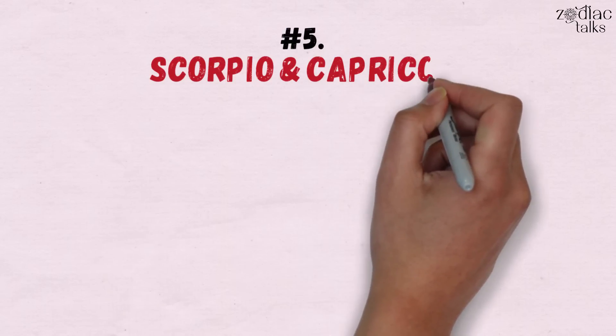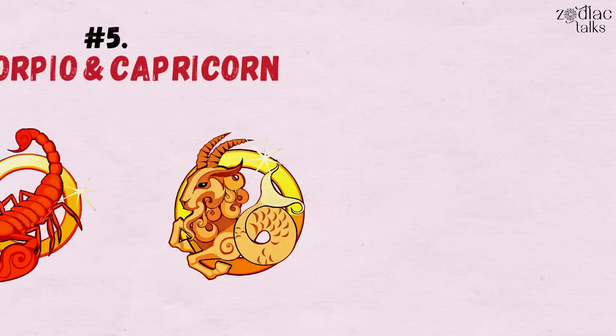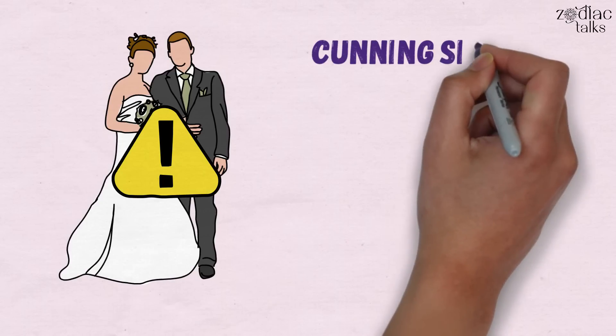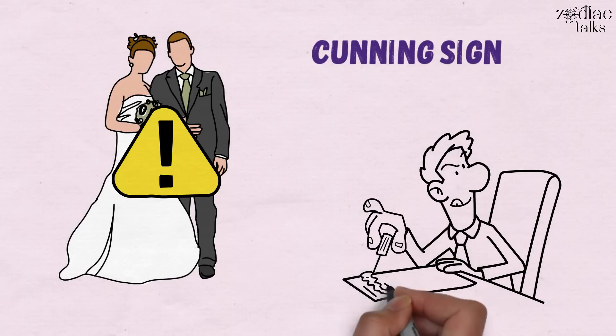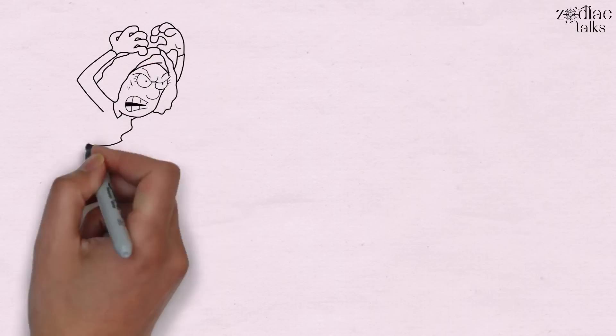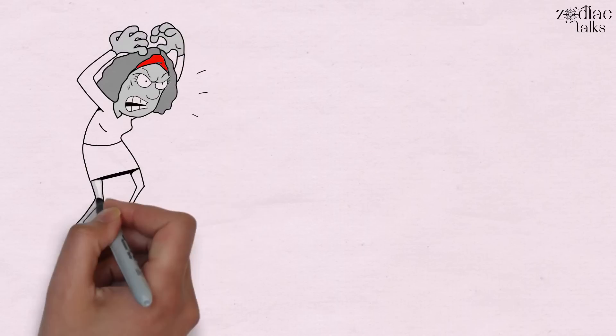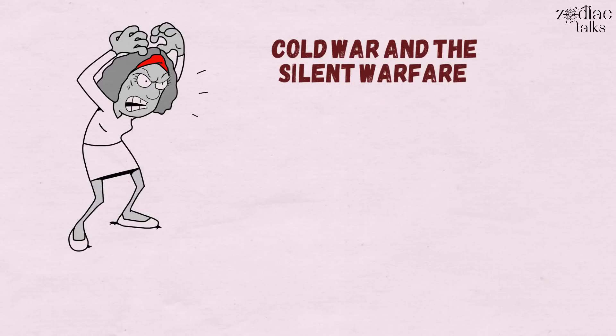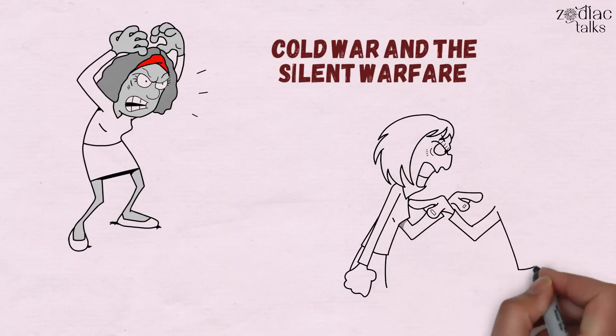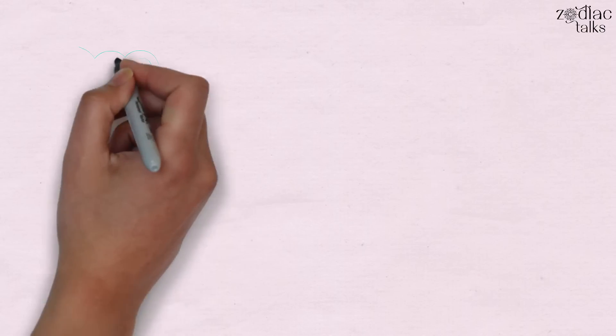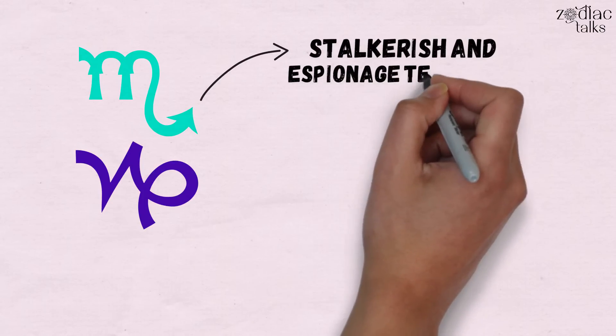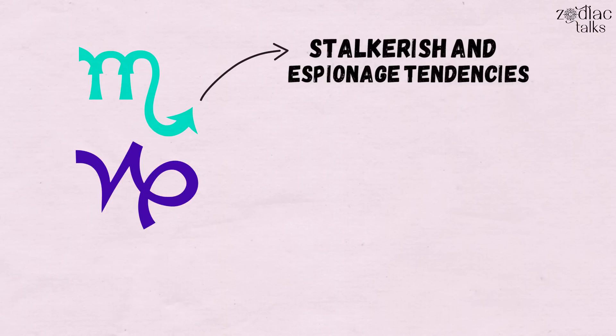Number five: Scorpio and Capricorn. This is perhaps the most dangerous and deranged pair of the Zodiac. Scorpio is a cunning sign that's capable of many misdeeds, but Capricorn is even worse. They just often don't get credit for it. These two are the epitome of the Cold War and silent warfare. They will keep each other very close because they think of each other as enemies. Both of these signs have strong stalkerish and espionage tendencies, so it's not weird that they both have each other under some kind of surveillance.